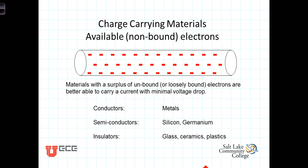Materials with loosely bound electrons that are free to move when an electric potential is applied, and thus are capable of carrying electrical current, are known as conductors. Metals are particularly effective conductors. On the other hand, materials with tightly bound electrons are poor conductors of electrical current and are referred to as insulators. Insulators are typically made of glass, ceramics, and plastic.